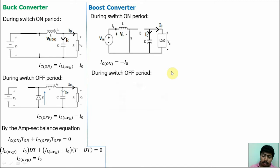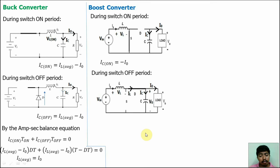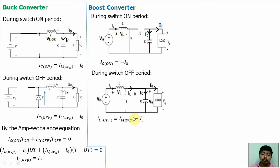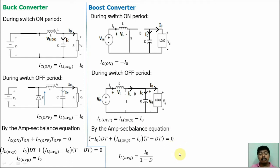During switch off condition, the switch is open. Current flows from the positive supply through the inductor and diode to the load, and the diode acts as forward bias. Applying KCL at the junction, we get Ic_off = IL_average − I0. Using the ampere-second balance equation: (−I0) × dT + (IL_average − I0) × (T − dT) = 0. Simplifying, we get IL_average = I0 / (1 − D).